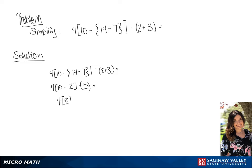So now we're going to further simplify what's in the bracket. So we have 4 times 8 times 5. And this is going to give us 32 times 5, which will give us our final answer of 160.